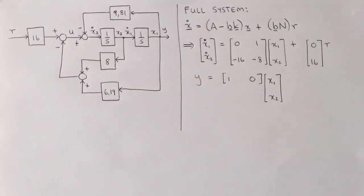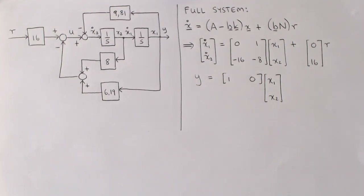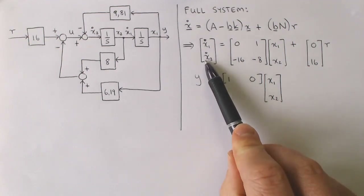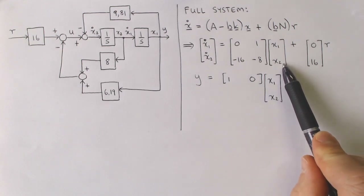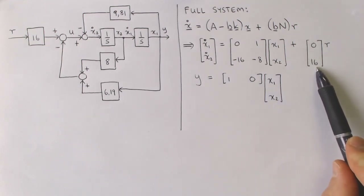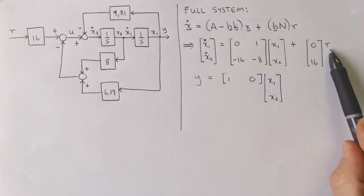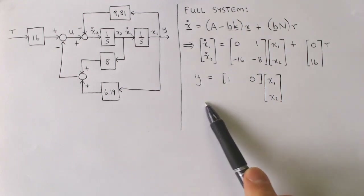The full system will respond to a step input as follows: the transient response will be critically damped with a natural frequency of 4 radians per second, and the steady state tracking error will be zero. The state variable model of the full system can be written as follows: the state equation is x dot equal to (a minus b k) times x plus b n times r, and the output equation is unchanged.